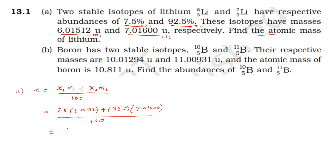The answer is 6.941 atomic mass units. The atomic mass of lithium is 6.941 u, considering significant figures.